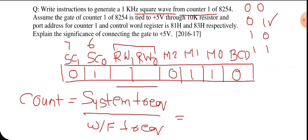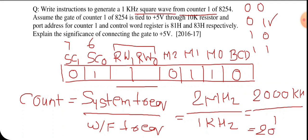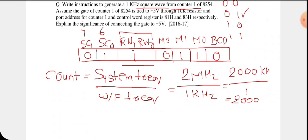In this question, no system frequency is specified, so we take 2 megahertz. The waveform frequency is 1 kilohertz. So the count = 2000 kilohertz divided by 1 kilohertz = 2000 in decimal. When we load the count we convert it to hexadecimal, which gives approximately 07D0H.